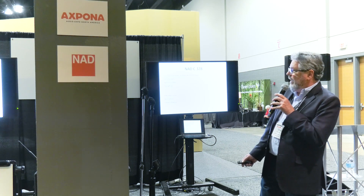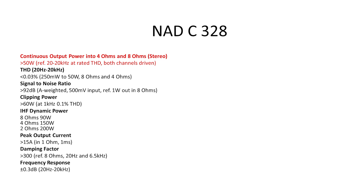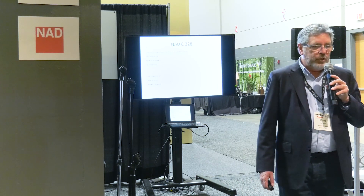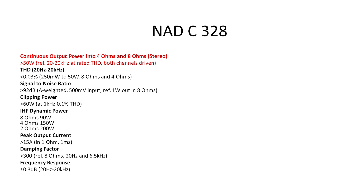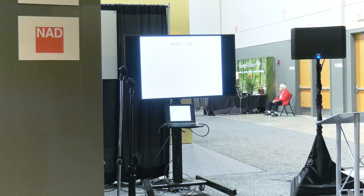Comparing the M32 to the C328: the 328 is a much smaller amplifier in the NAD range — only 50 watts per channel, a Class AB amplifier. In many specs it's similar but not quite as good. THD is 0.03% rather than 0.005%. Signal-to-noise is 92 instead of 95, so it's 3 dB more noisy. Dynamic power is less but still impressive for a 50-watt amplifier: 90 watts into 8 ohms, 150 into 4, and 200 watts into 2. Peak output current is half as much. That's kind of what you're paying for.